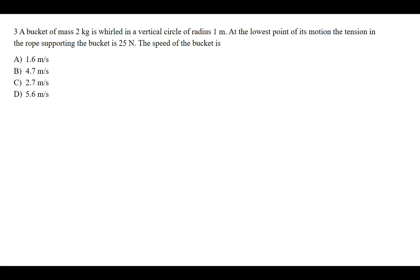Welcome to today's tutorial. In this tutorial we're going to discuss this physics question on the screen which says: a bucket of mass 2 kg is whirled in a vertical circle of radius 1 meter. At the lowest point of its motion the tension in the rope supporting the bucket is 25 newtons. The speed of the bucket is... So in this question we've been asked to calculate the speed of the bucket at its lowest point.